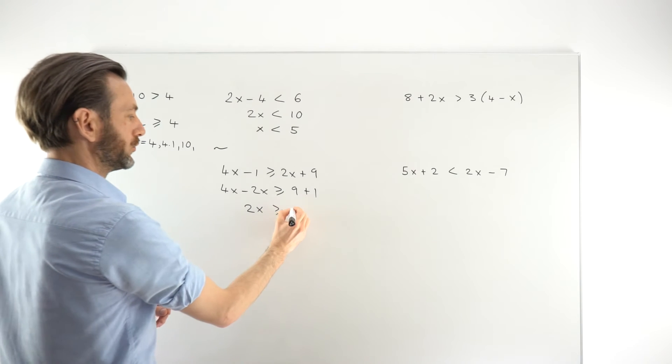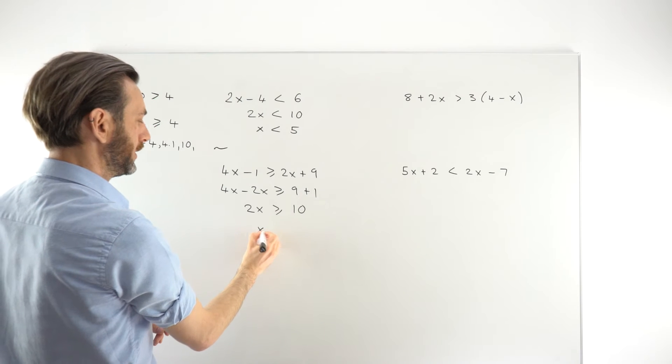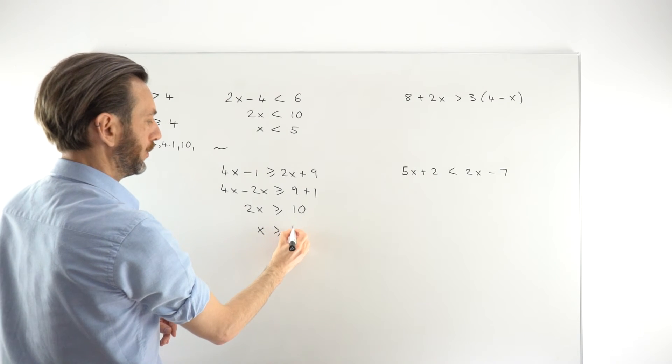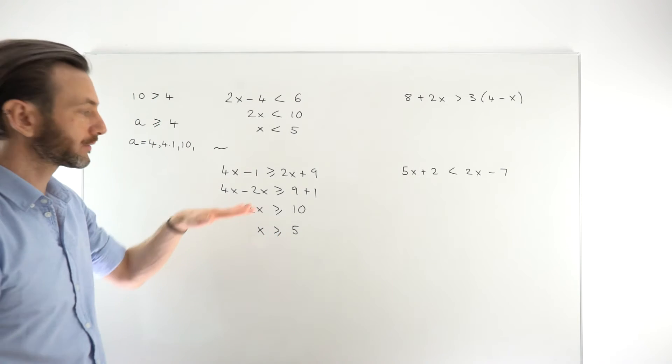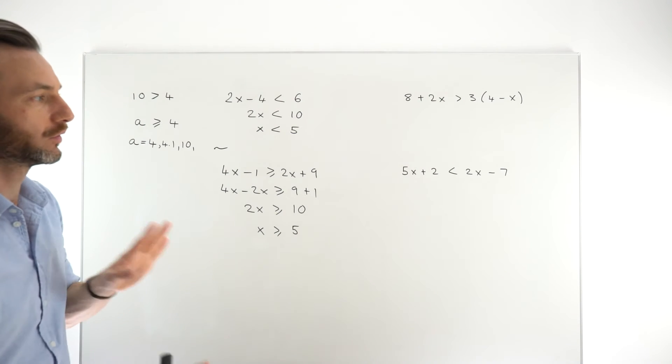That's greater than or equal to 10. Divided both sides by 2, or just similar numbers we had up there actually, x is greater than or equal to 5. So just flowing through that like a normal equation to get to the solution. Nothing really changed there.